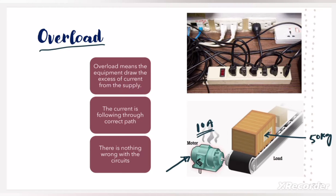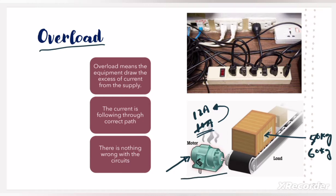But suppose someone kept 60 kg load instead of 50 kg, then this motor requires more current to roll this conveyor belt. In that case the motor will take 12A of current, which is greater than its rated current. In this situation we can say that the motor is overloaded.